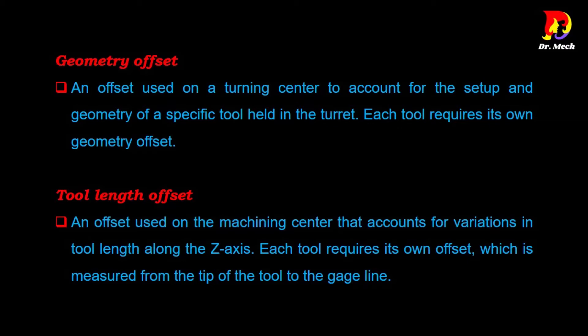Tool length offset is an offset used on a machining center that accounts for variations in tool length along the Z-axis. Each tool requires its own offset, which is measured from the tip of the tool to the gauge line. This offset is also set while setting up each tool.